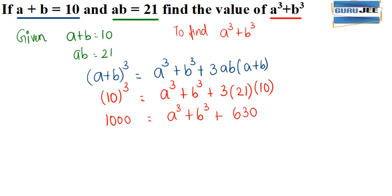Now we need a cube plus b cube so we can bring the 630 to the other side. So it becomes 1000 minus 630 is equal to a cube plus b cube.